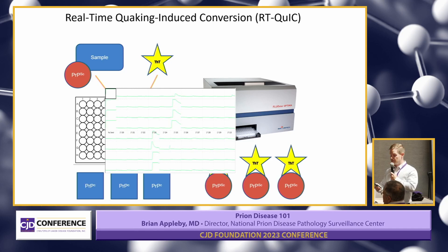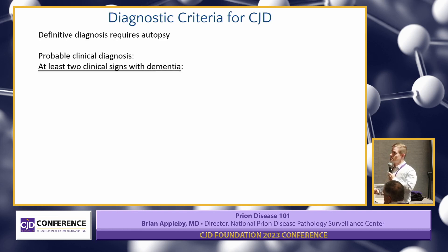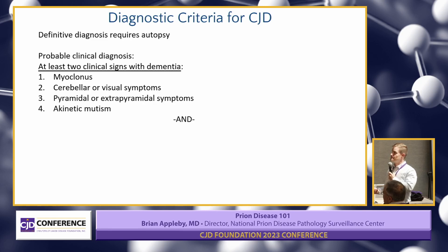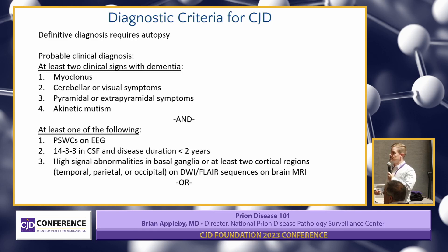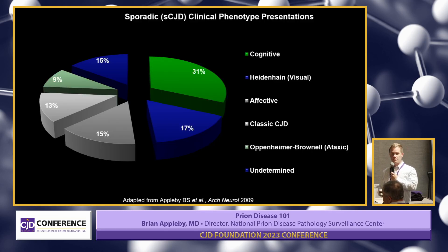Regarding diagnostic criteria: you either have to recognize a clinical syndrome — which includes a variety of different symptoms — plus specific tests like an EEG, brain MRI, or 14-3-3. But really, RT-QuIC has made the difference because now you don't need to wait for the full clinical syndrome to evolve. You just need any kind of neuropsychiatric symptom with a positive RT-QuIC, and you can make a probable diagnosis. This really increases the confidence of a diagnosis for a patient, because people don't walk into your office with the full clinical syndrome of CJD.